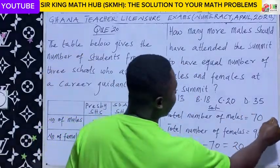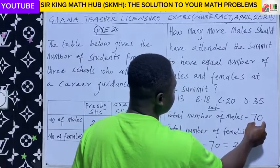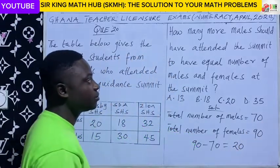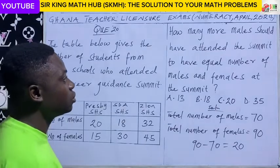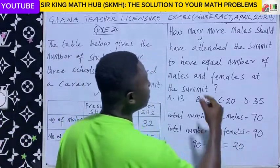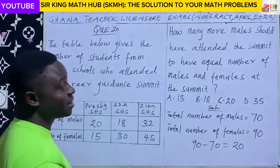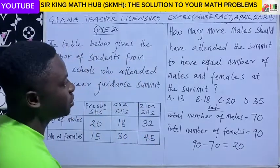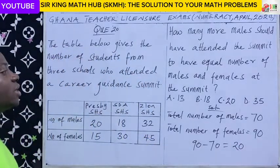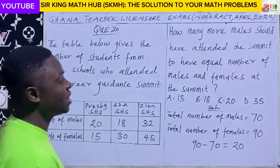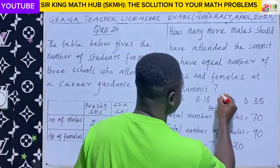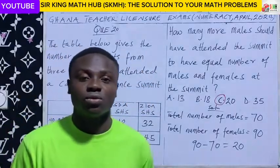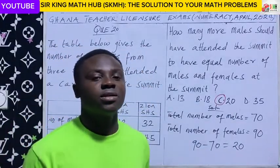90 minus 70 gives us 20. When we add 20 to 70, that gives us an equal number of 90. So in conclusion, 20 more males should have attended the summit to have an equal number of females. Looking at the alternatives, the right answer is option C. I hope you enjoyed this episode. Thanks for watching.